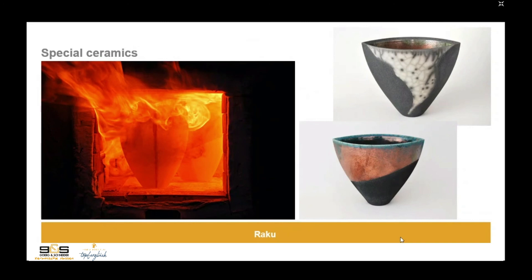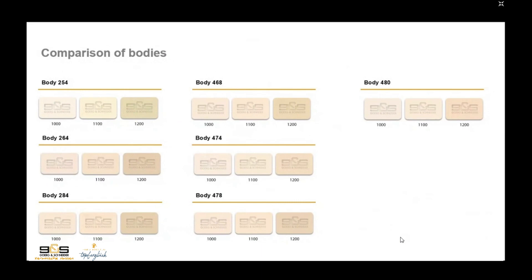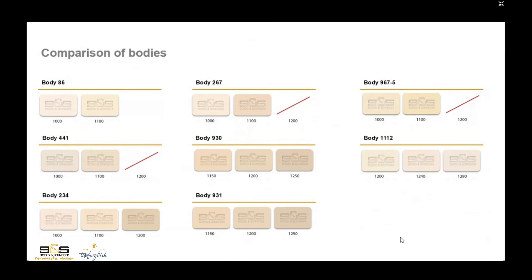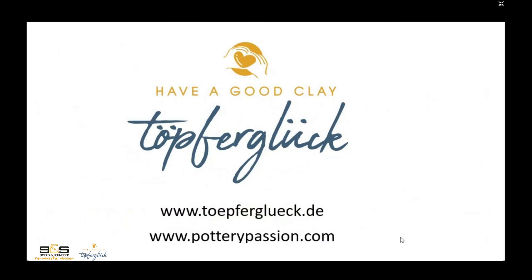When you compare all the bodies on one sheet, you do not see a lot of differences because the distinctions are not visible in color but are in the technical data. You should use our page potterypassion.com, where you can find water absorption, thermal expansion coefficient, and all technical data to compare the bodies. The page is also available in German at topferglück.de or potterypassion.com.